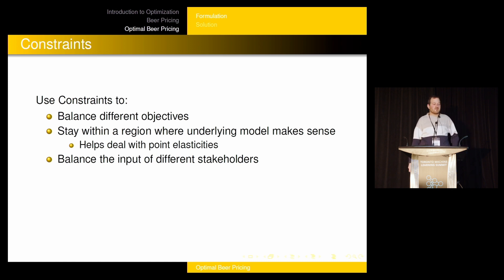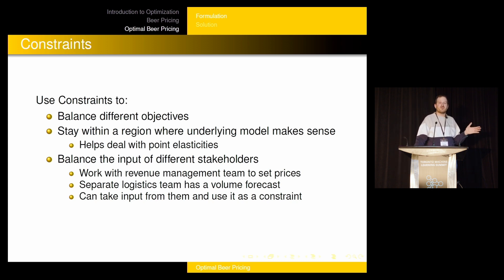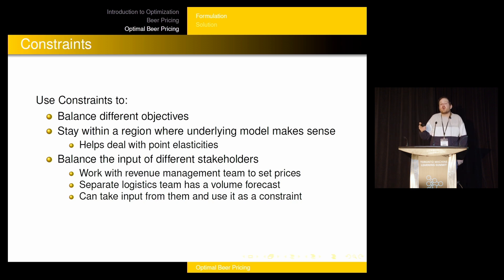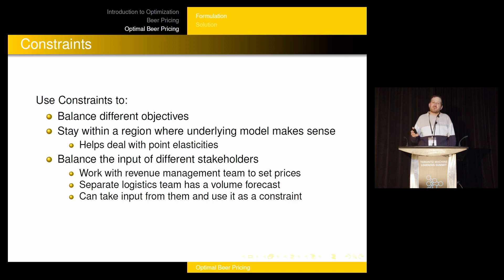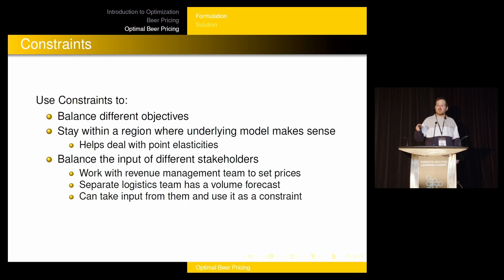Constraints are also great for balancing input from different stakeholders. We work a lot with the revenue management team, who set prices, and there's another team responsible for logistics deciding how much beer to produce. They have their own models estimating how much beer will be sold, and how much grain to buy at the beginning of the year. If we tell the revenue management team that setting prices a certain way could sell way more beer than expected, and then we go talk to the logistics team, they laugh and say their models are confident there's no way you'll ever sell more than a certain amount. We can use that as a constraint too — constrain the model to never believe it will sell more than X amount of beer. That's a constraint coming from another team we can be respectful of, and building trust between teams is really important when doing this kind of work.